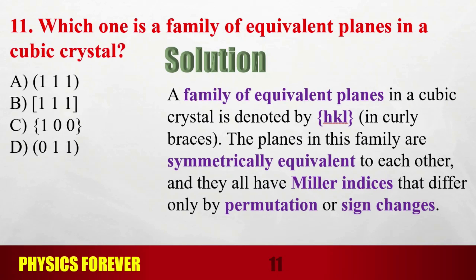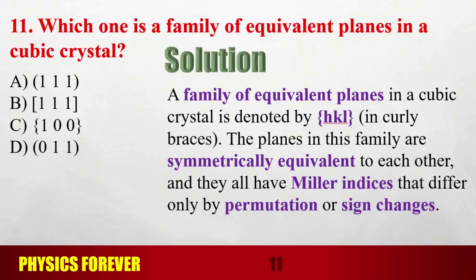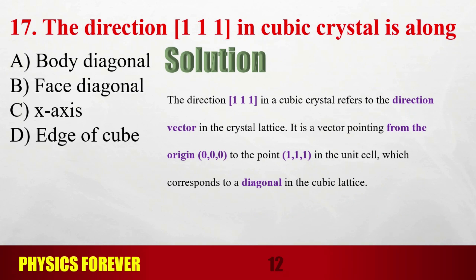For question number 7, the conclusion involves the family of equivalent planes in a cubic crystal denoted by curly braces. For question number 17, the direction [111] should be a diagonal — specifically, the direction [111] in a cubic crystal corresponds to the body diagonal. These are the doubts we have cleared today, and we now move to the next topic.